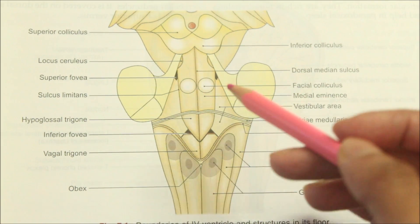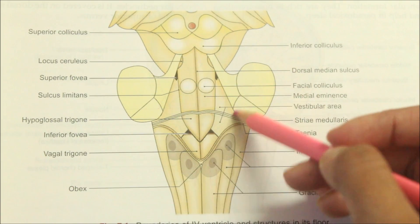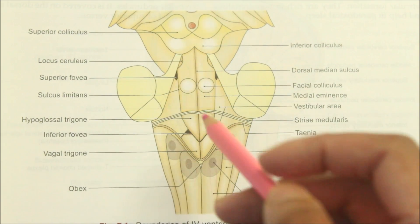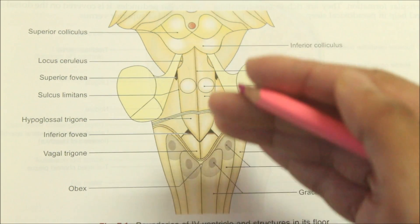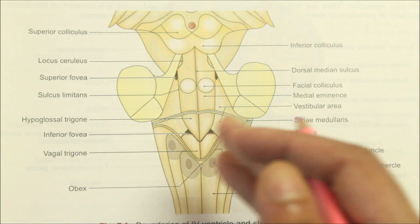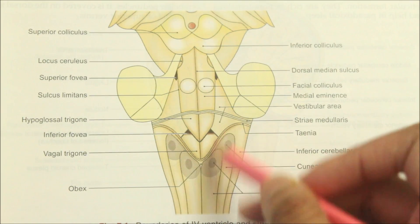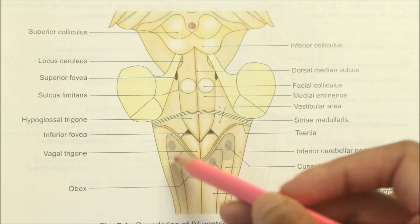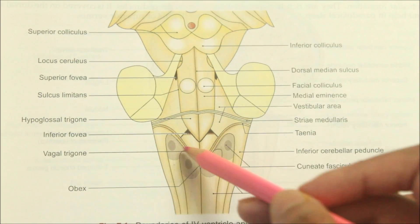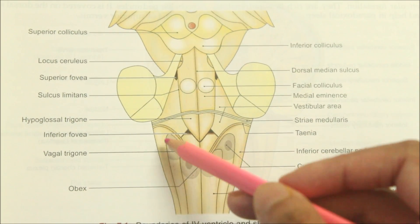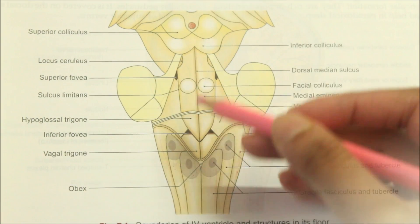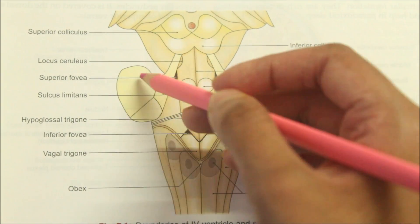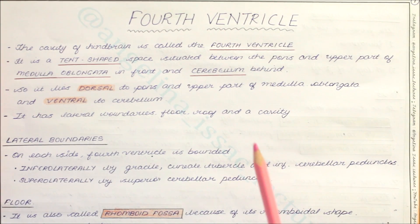Now let's look at the lateral boundaries of the fourth ventricle. On each side, the fourth ventricle is bounded infralaterally — that is, inferiorly and laterally — by the gracile tubercle, the cuneate tubercle, and the inferior cerebellar peduncle. It is bounded supralaterally by the superior cerebellar peduncles.